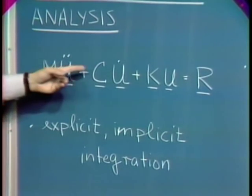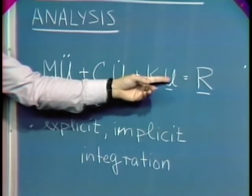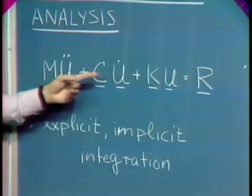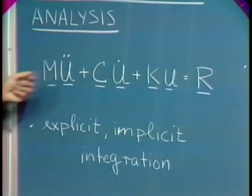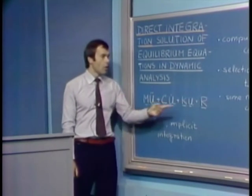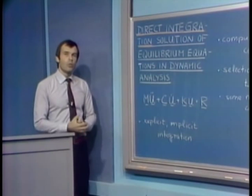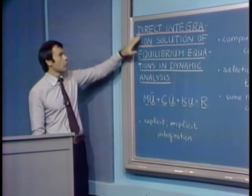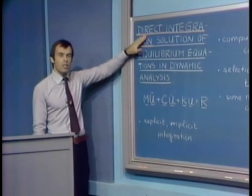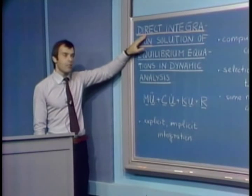M is the mass matrix, C is the damping matrix, K is the stiffness matrix, U is the displacement vector, and here we have the velocities and the accelerations at the nodal points. R, of course, being the load vector, and this load vector is now time dependent. We will talk about the mode superposition procedures in the next lecture.